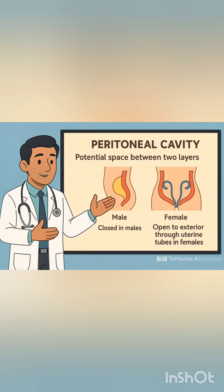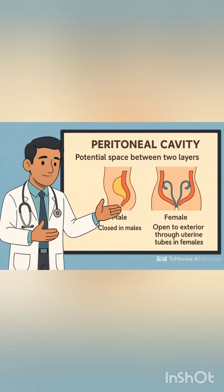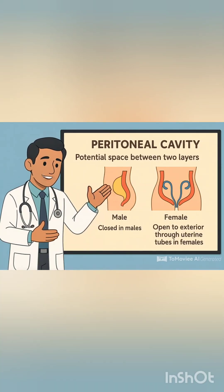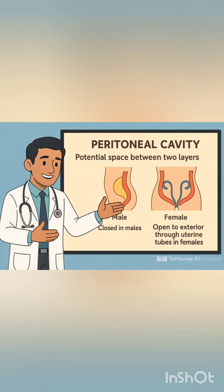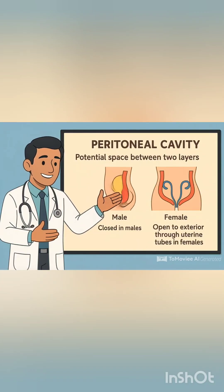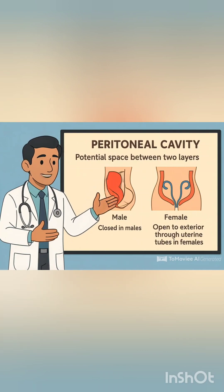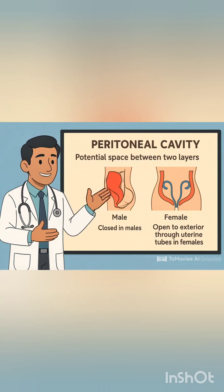The peritoneal cavity is a potential space between the two layers of peritoneum, and it differs in males and females. It is closed in males and open to the exterior through the uterine tubes in females.